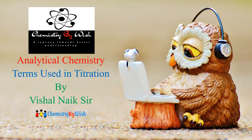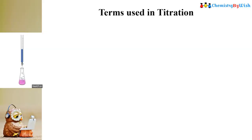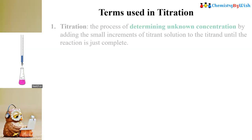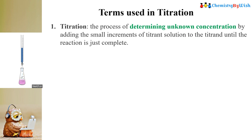So the first term used in titration is titration itself. This is the process by which we can actually determine the concentration of an unknown solution by titrating it with a known concentration solution. So by titrating the two solutions, we get a volume and by using the formula N1V1 = N2V2, we can actually determine the concentration of the unknown one.